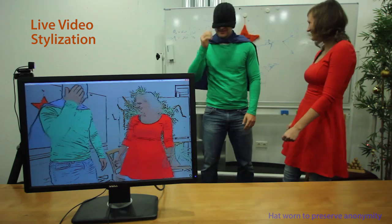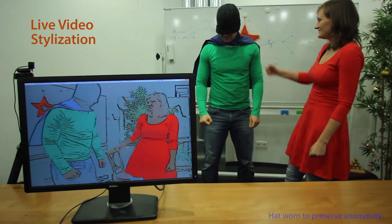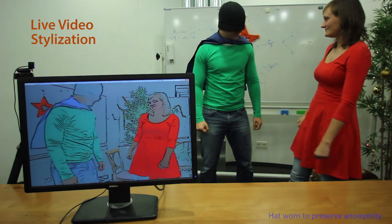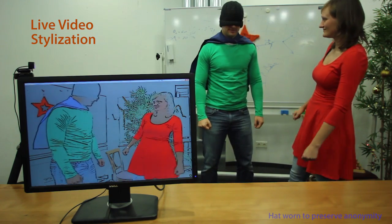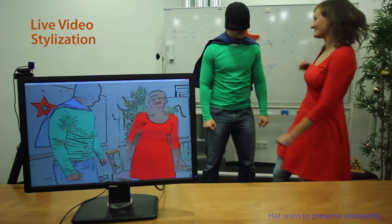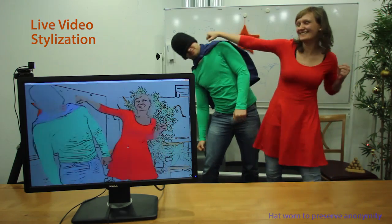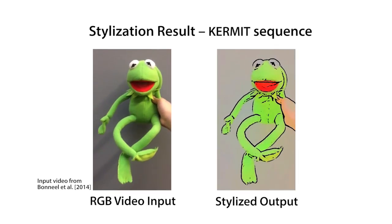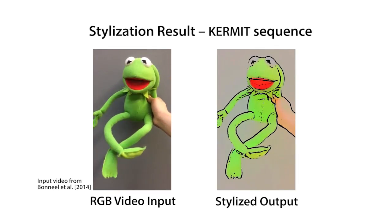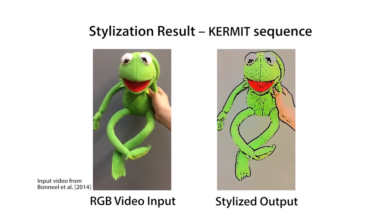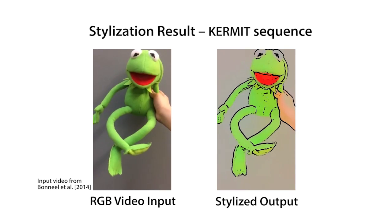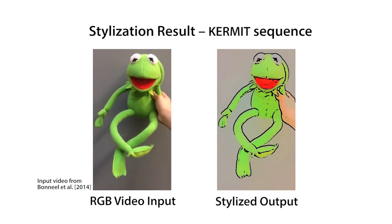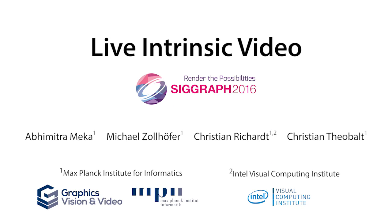We also present live abstraction and stylization of video streams. We achieve this by overlaying the strong edges of the shading layer onto the reflectance layer. The actors are made to appear cartoonish. Kermit the Frog is converted to a 2D cartoon. Such applications are now possible in real time with our technique, live intrinsic video.